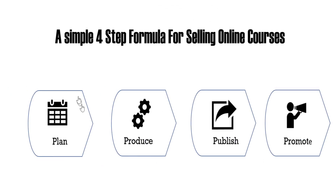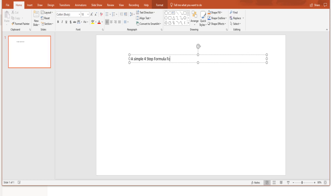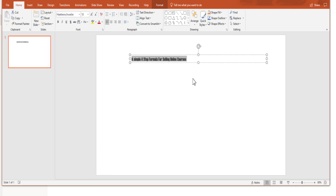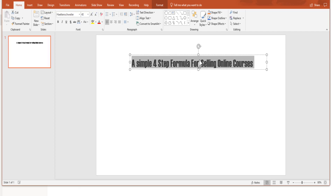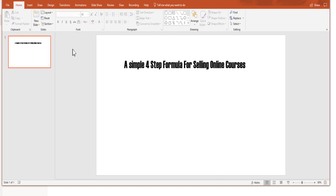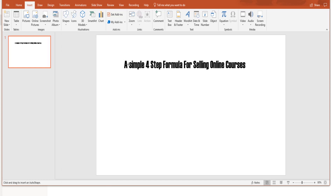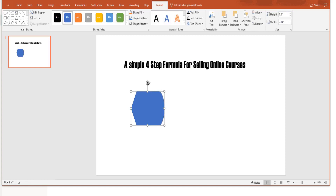Let's get started from a blank slide. For the title, insert a text box and type 'A Simple Four Step Formula for Selling Online Courses'. The font we want is Enchanted Chivalry at size 40, centered and slightly downward. Now we insert four shapes — the shape we like is the Display shape from flowcharts. Place it, rotate it, then use Ctrl+D to make three copies.